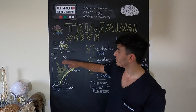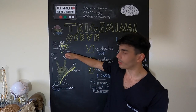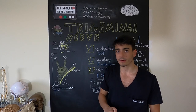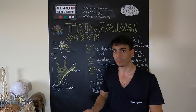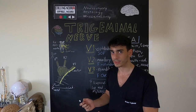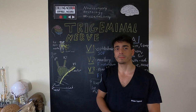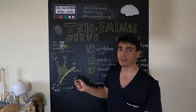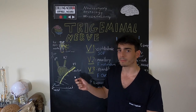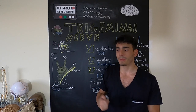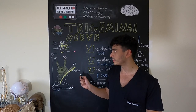The trigeminal nuclei are located from the upper cervical spinal cord to the pons, and they are divided by type of sensation or motor function. The chief sensory nucleus, for touch, is located in the pons. The mesencephalic nucleus, for proprioception, is located between the medulla oblongata and the midbrain, and the spinal nucleus handles pain and temperature in the upper cervical spinal cord.